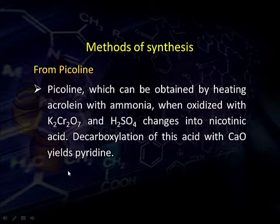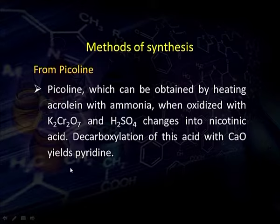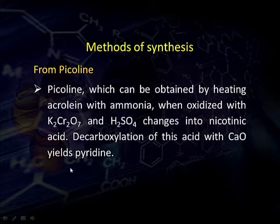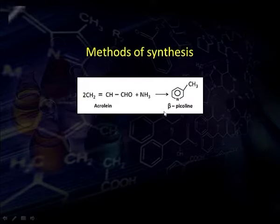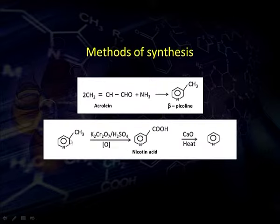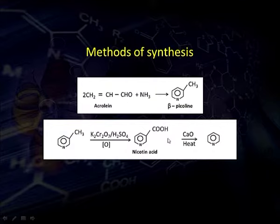From picoline, particularly beta-picoline, which can be obtained by heating acrolein with ammonia: when oxidized with an oxidizing mixture of potassium dichromate and sulphuric acid, it converts into nicotinic acid. Nicotinic acid on decarboxylation with calcium oxide gives pyridine. So acrolein treated with ammonia gives beta-picoline, which when oxidized with potassium dichromate and sulphuric acid first converts to nicotinic acid, and this nicotinic acid when heated with calcium oxide converts into pyridine. These are some of the important methods of synthesis of pyridine and its derivatives.